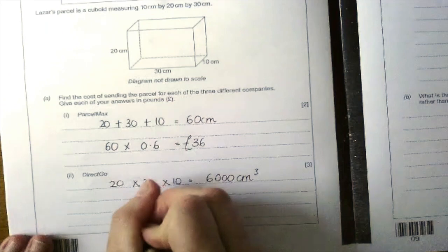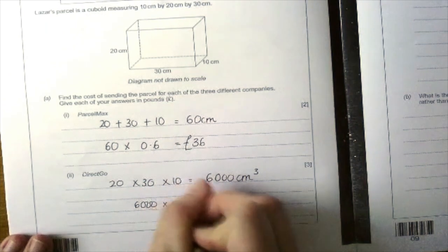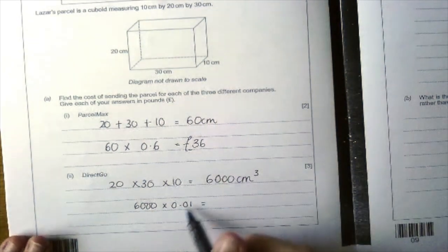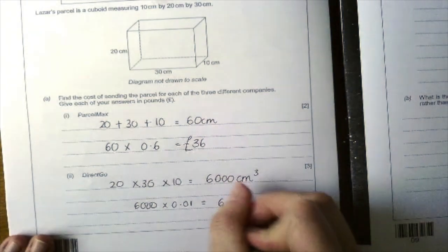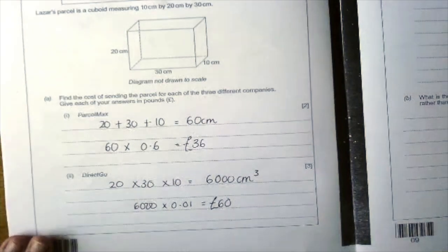I'm then going to times that by 0.01. So these two zeros basically cancel two zeros out here. It's a little trick. So it's going to cost me 60 pounds.